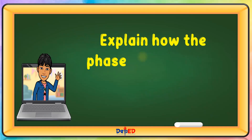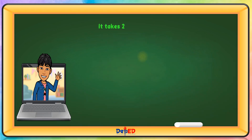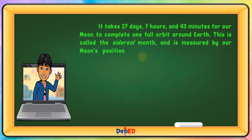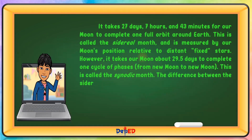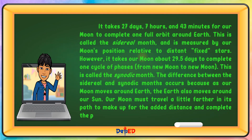Explain how the phases of the moon relate to the length of the month. It takes 27 days, 7 hours, and 43 minutes for our moon to complete one full orbit around Earth. This is called the sidereal month and is measured by our moon's position relative to distant fixed stars. However, it takes our moon about 29.5 days to complete one cycle of phases from new moon to new moon. This is called the synodic month. The difference occurs because as our moon moves around Earth, the Earth also moves around the Sun, so our moon must travel a little further in its path to complete the phase cycle.